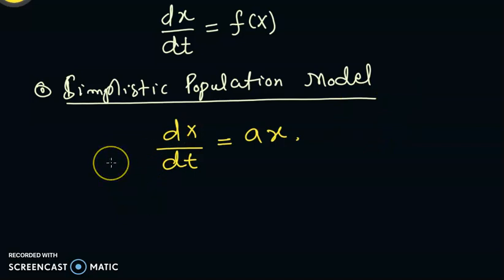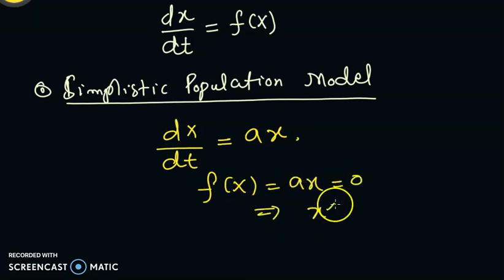We have seen that the equilibrium solution in this case is f(x) = ax = 0, which implies x* = 0. So we have only one equilibrium solution, x* = 0.